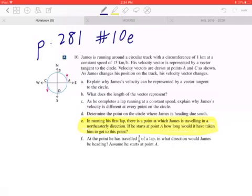His velocity vector is represented by a vector tangent to the circle. Velocity vectors are drawn at points A and C as shown. As James changes his position on the track, his velocity vector changes.